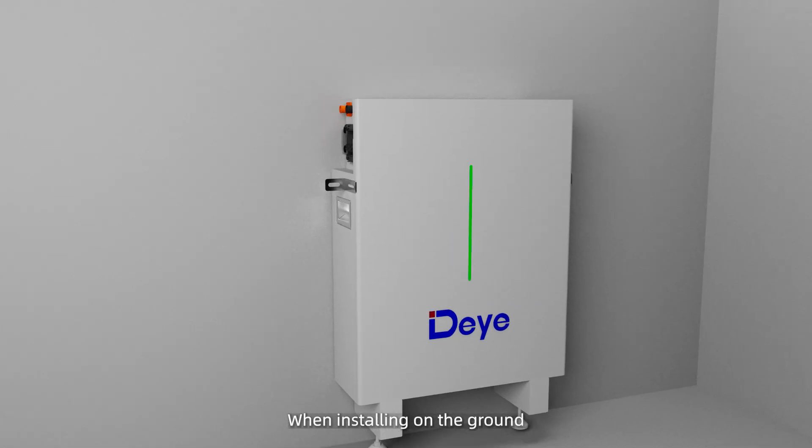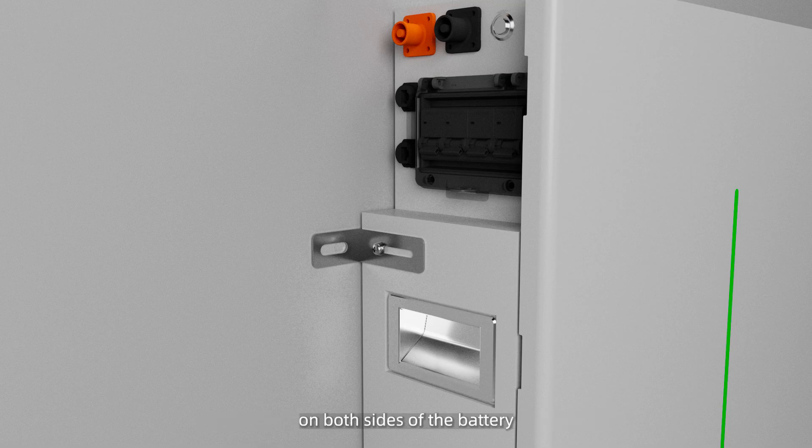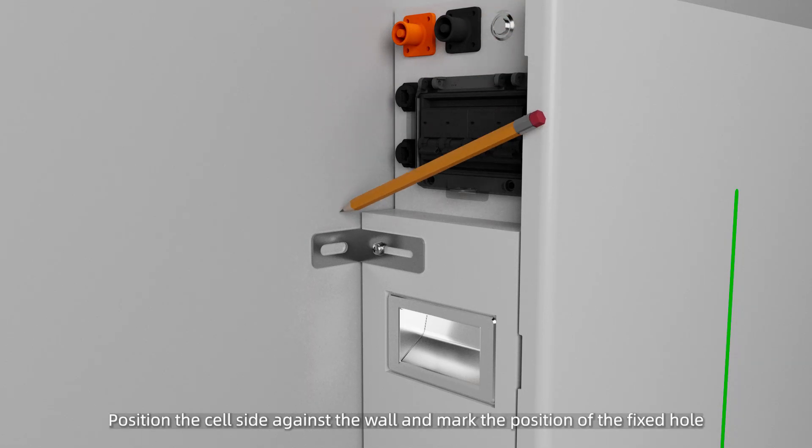When installing on the ground, use two M6x10 screws to fix the left and right fixing gears on both sides of the battery. Position the cell side against the wall and mark the position of the fixed hole.